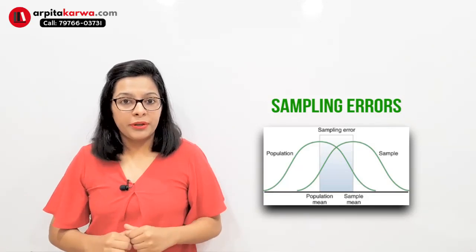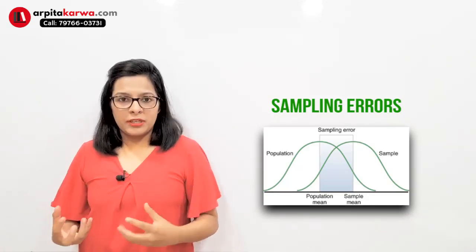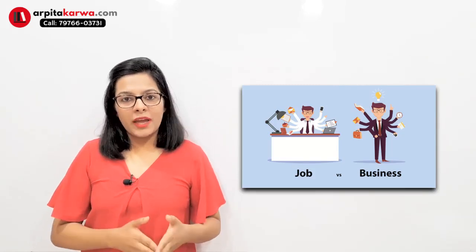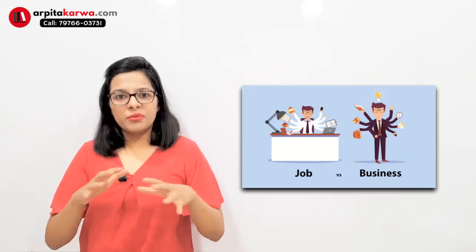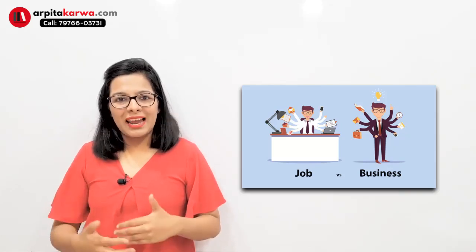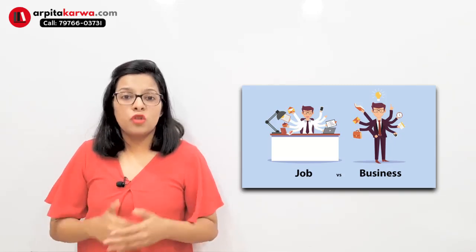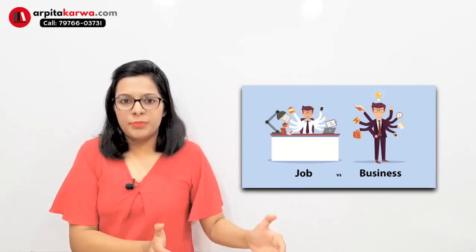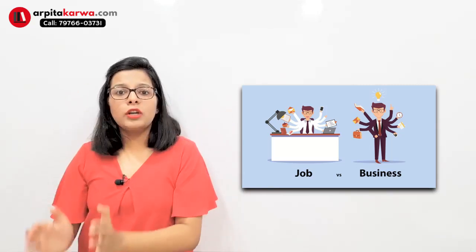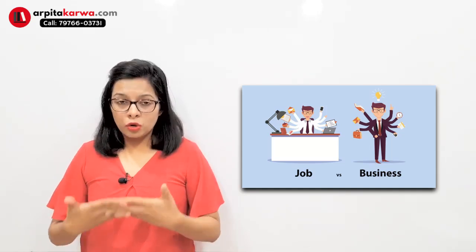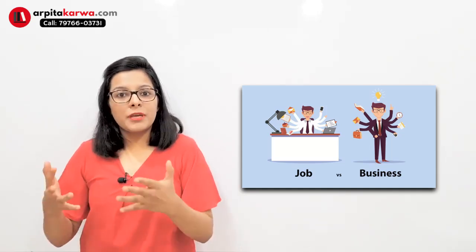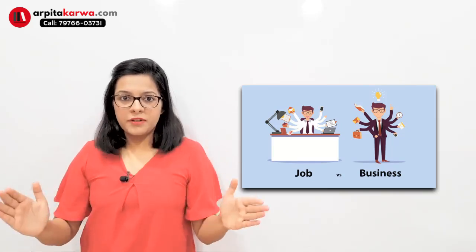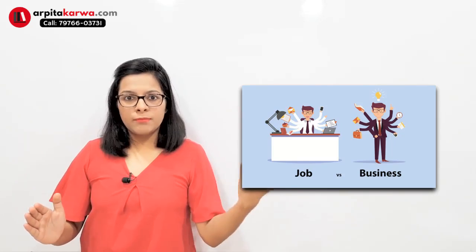For example, suppose I want to research who is more happy — people who are in a job or people doing their own business. I take a sample of 200 people: 100 in jobs and 100 running their own business. When I analyze their happiness level, I find that people in jobs are more happy. But when I apply this result to the broader population, I might find it differs — generally, people in business tend to be happier than those in jobs. That difference between the sample result and the population reality is known as sampling error.